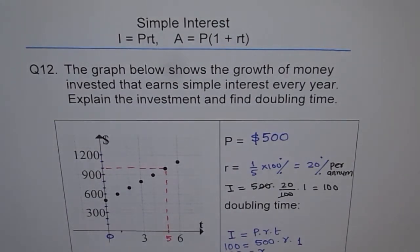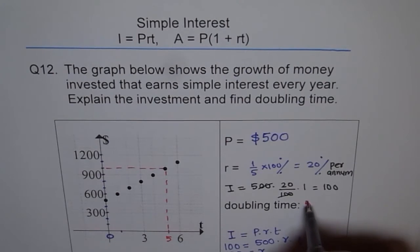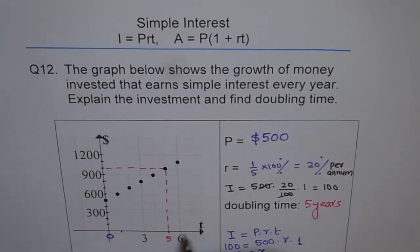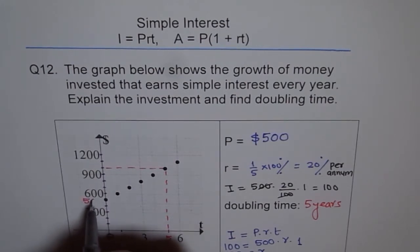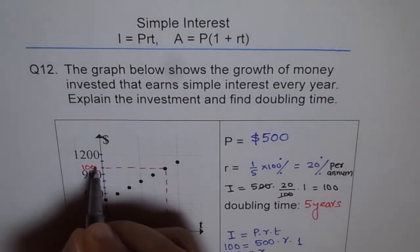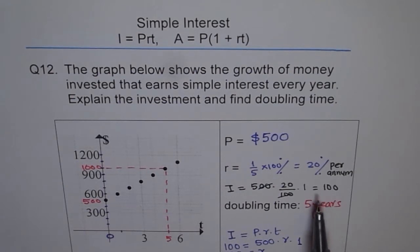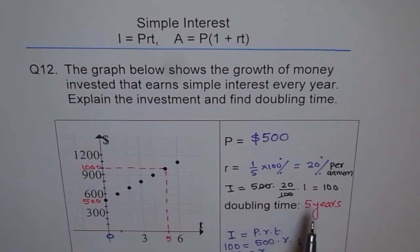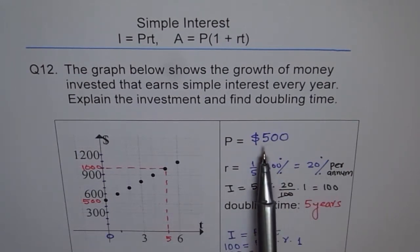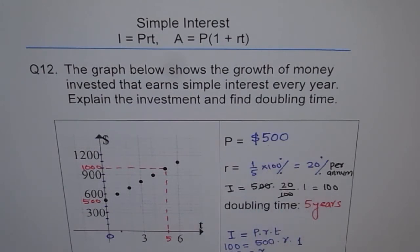The doubling time is five years. From the graph we can see that the $500 invested doubles and becomes $1,000 after five years. Notice that the doubling time is the time when the interest earned equals the principal — here both are $500.